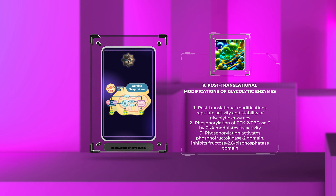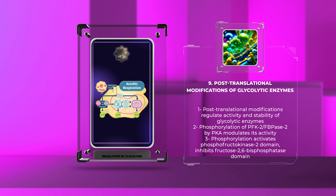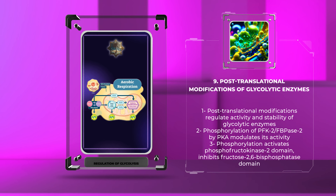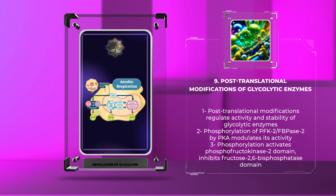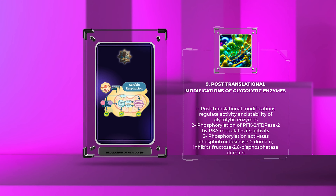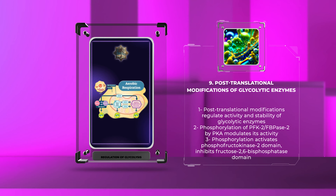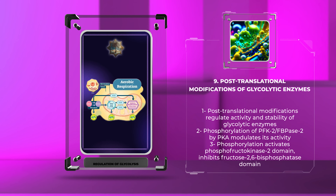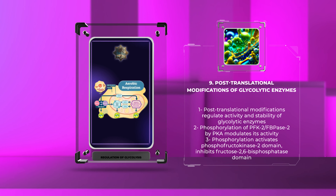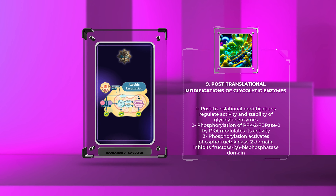Post-translational modifications, including phosphorylation, acetylation, and ubiquitination, regulate the activity and stability of glycolytic enzymes. These modifications are reversible and serve as crucial mechanisms for fine-tuning enzyme function. For example, phosphorylation of phosphofructokinase-2/fructose-2,6-bisphosphatase, PFK-2/bisphosphatase, by protein kinase A, PKA, modulates its bifunctional activity. Phosphorylation activates the phosphofructokinase-2 domain, promoting glycolysis, while inhibiting the fructose-2,6-bisphosphatase domain, preventing gluconeogenesis.